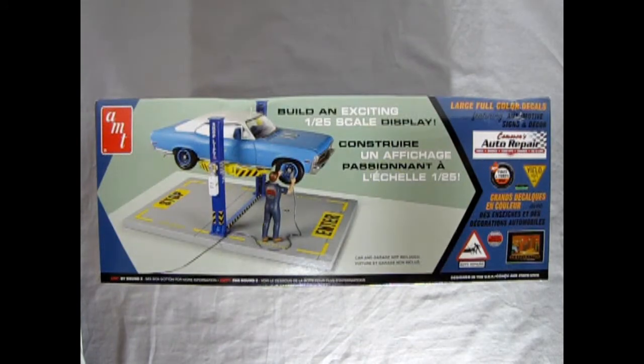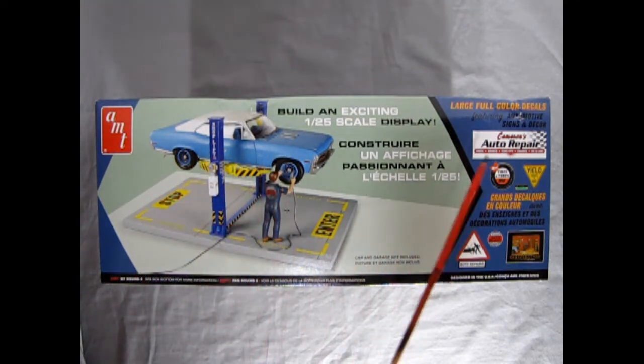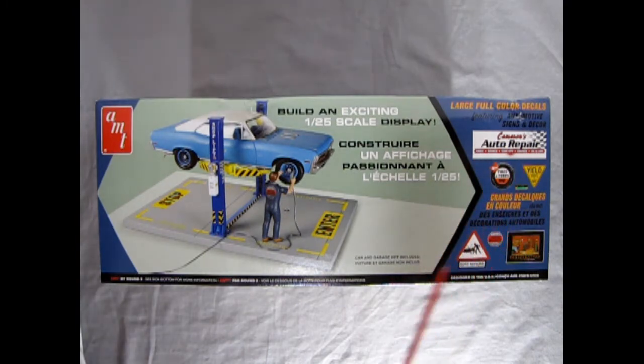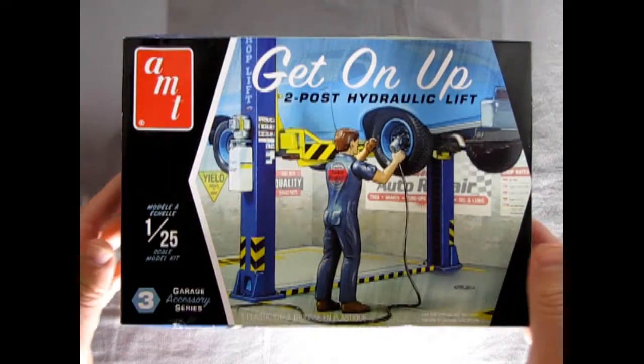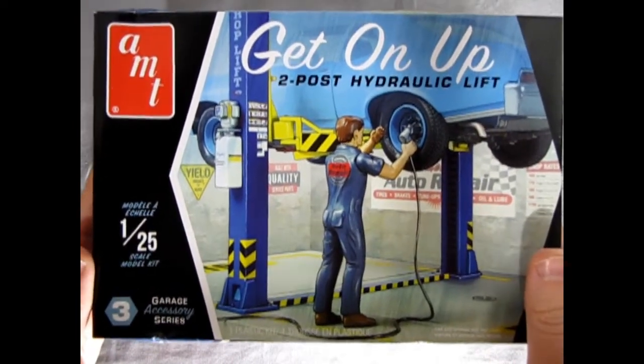And once again, on this side of the box, we can see the completed model and just how awesome it actually is. The only thing not included is, of course, the 72 Chevy Nova. But over here, we also get these great signs, which you can see on our decal sheet. And now let's take the lid off this model kit and see what's inside the box.